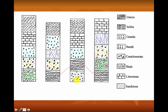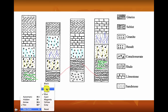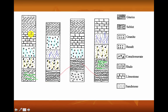So our sequence so far is: oldest layer granite, then gneiss, then schist, then conglomerate, then sandstone. Then we need to correlate our next layer. Since we have basalt here, basalt would have to be our next layer because our sandstone is correlating. Which layer would come after basalt? After basalt, we're going to have limestone. And then our final layer on the top would be shale.